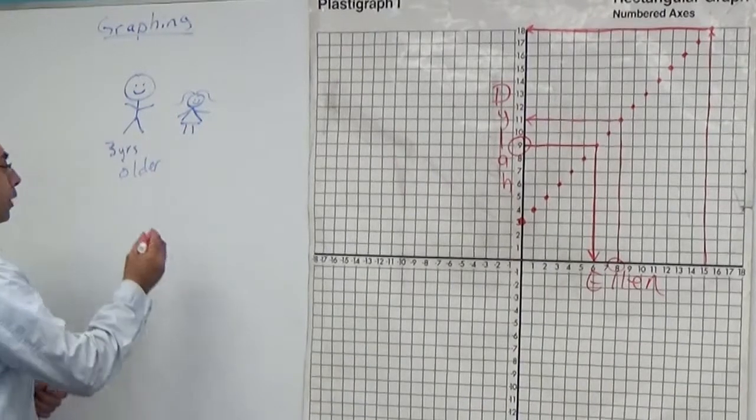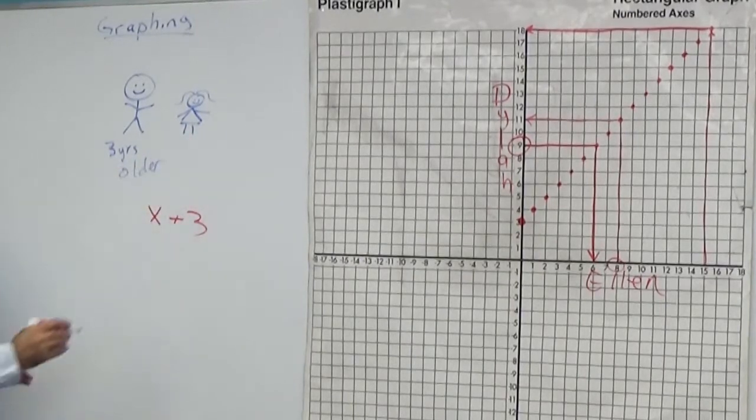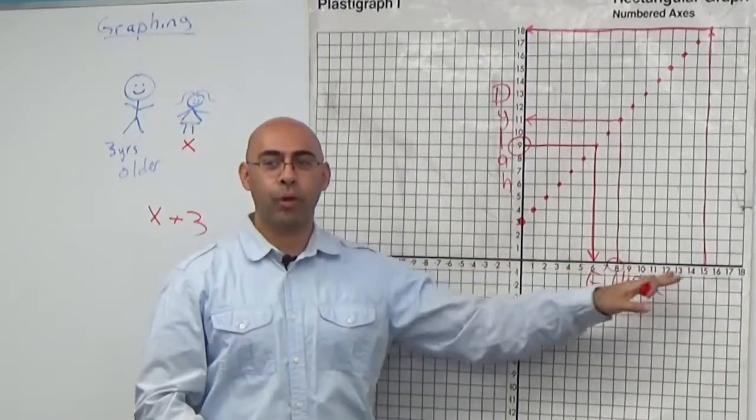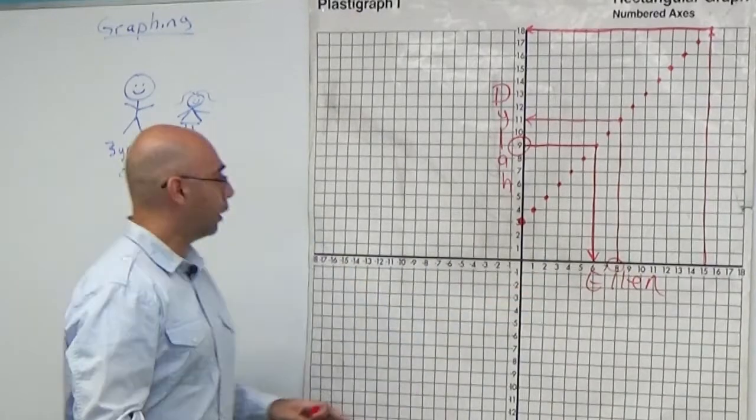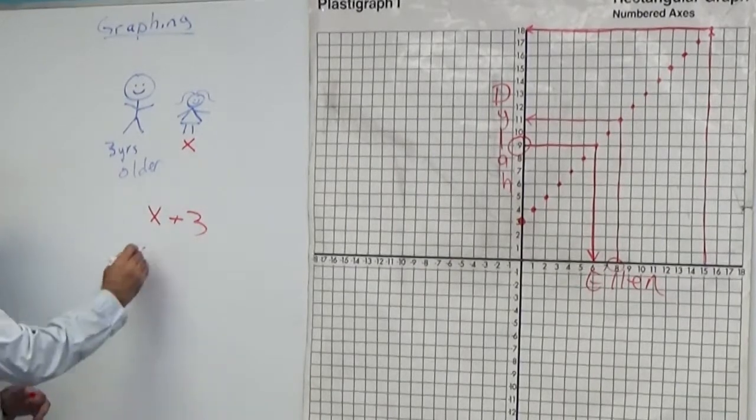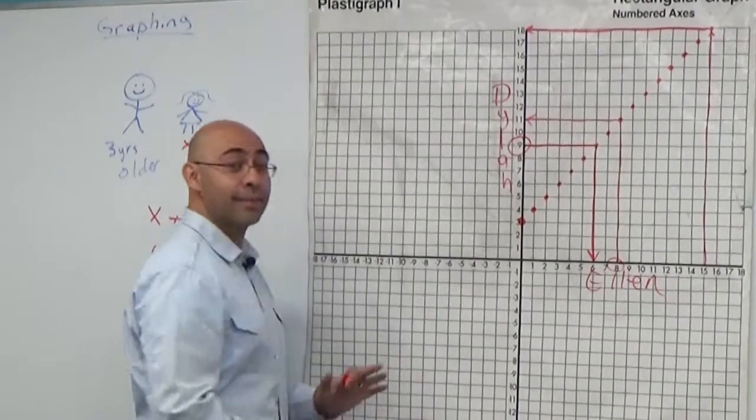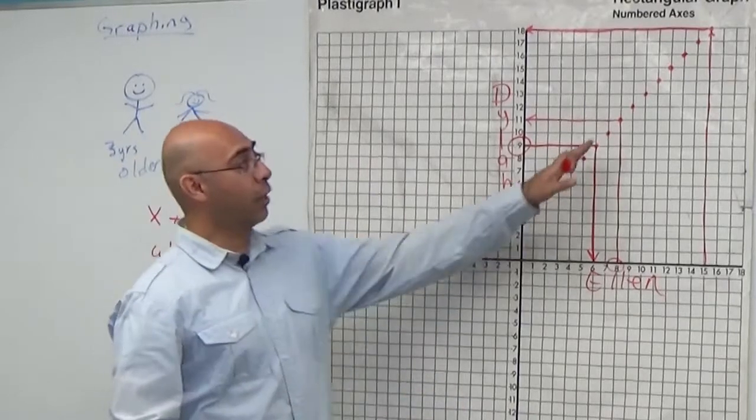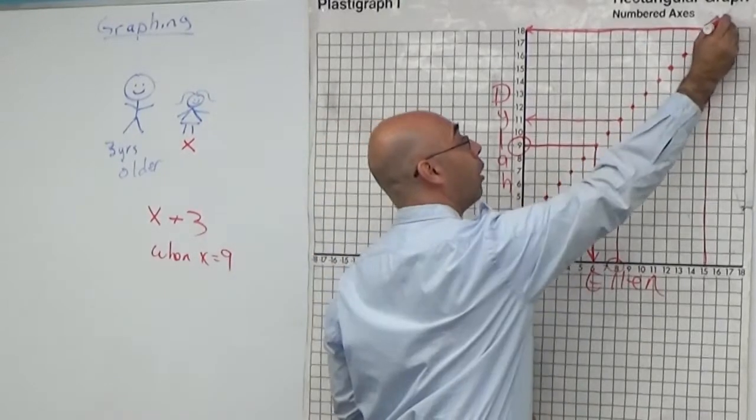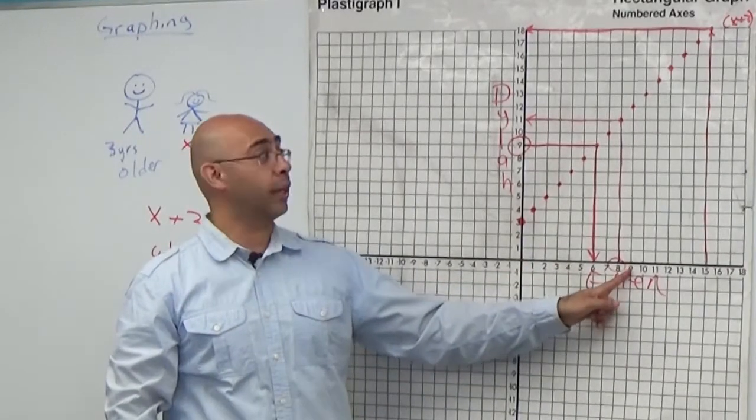Find the value of X plus three. And in this case, X is going to be Ellen. So a nice hint for you. Whatever number is down here, that represents X. So they want you to find X plus three when X equals nine. So again, all that means is this. This graph right here is already called X plus three. They're not telling you that, but I'm telling you. This here is already called X plus three. Meaning, anytime you find this number, just add three to it and you'll find the other number.